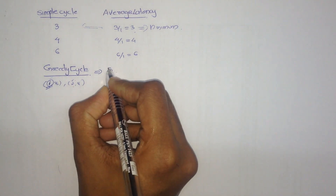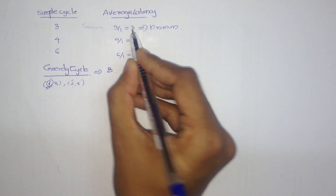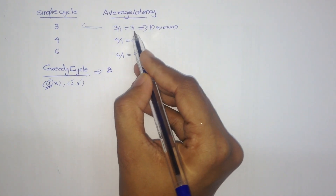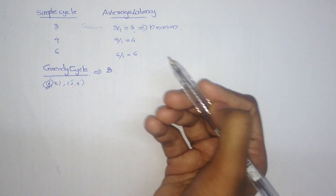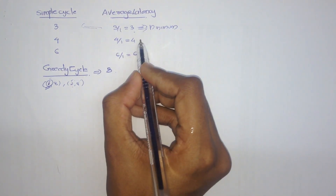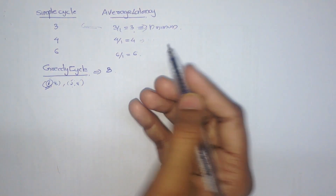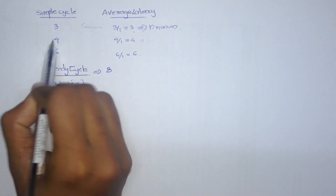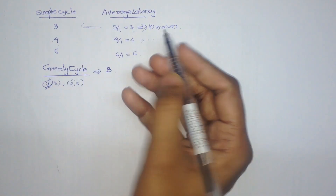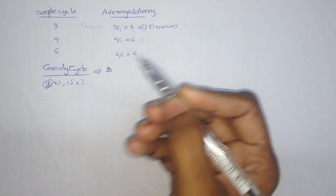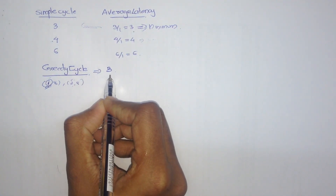We also check if any other minimum value is below 3. Here, there is no other value. If there were any value — for example, if it were 1.2 — we would also take that value along with its corresponding symbol cycle. Here it is only 3; there is no other value less than 3. Hence, we can consider 3 as the greedy cycle.